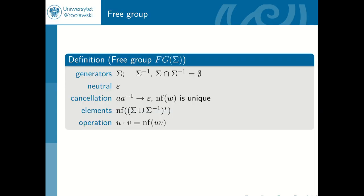Let us fix some notions. The free group we will be dealing with is generated by a set of generators sigma — I will also call them letters — and we assume that they are disjoint with the inverses, so sigma intersection with sigma to minus one is an empty set. I will denote the neutral element by epsilon. There is a natural cancellation or reduction on the elements of the free group, so a to minus one reduces to epsilon. A normal form I will denote as written here, and this is just whatever is obtained after the cancellation, and of course this doesn't depend on the order of the cancellation. The elements of the free group for us will be just the normal forms of every possible word over sigma and sigma to minus one, and the operation in the free group just takes two words, concatenates them, and completes the normal form.